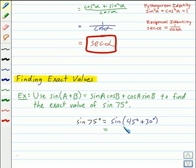We can write our expression as sine of 45 degrees times cosine of 30 degrees plus cosine of 45 degrees times sine of 30 degrees.